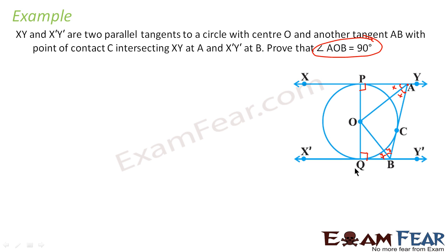The angles at P and Q are 90 degrees. The angles at A and B are bisected by OA and OB respectively — we can prove this using similar triangles. So in quadrilateral PABQ, we know angle P is 90°, angle A is 2X, angle B is 2Y, and angle Q is 90°.